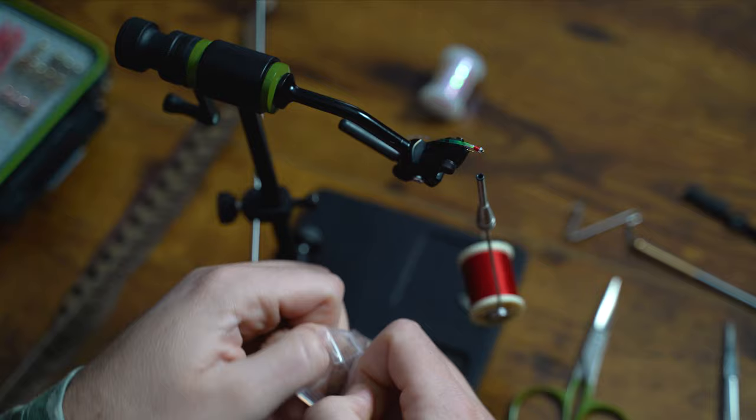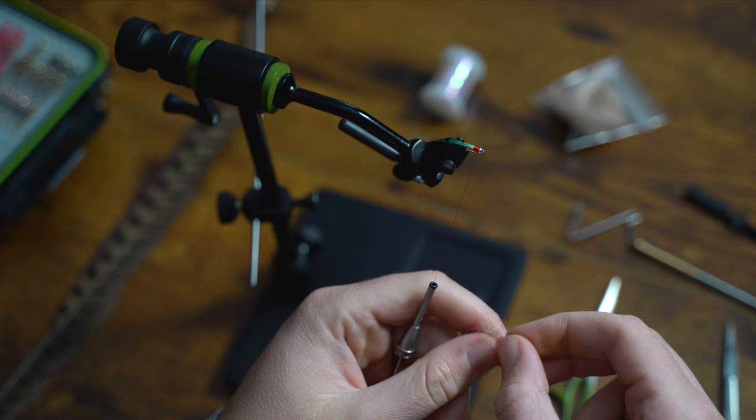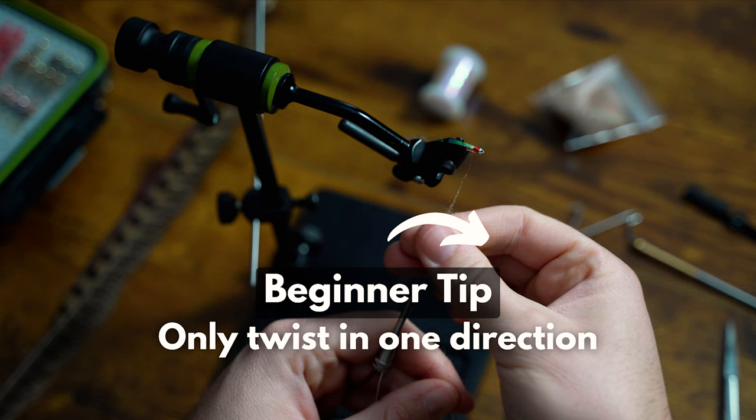Now that we've got a nice thread base, we're going to create a one inch dubbing noodle. Now a little tip on this fly: less is more with the dubbing. It's really easy to go overboard on the dubbing with such a small fly, so start with a little bit and add more as needed. A little side note for any beginners: when you're forming a dubbing noodle, only twist in one direction. If you twist both ways, your dubbing is never going to attach to that thread and you're going to get quite frustrated. Now let's create our dubbing thorax.